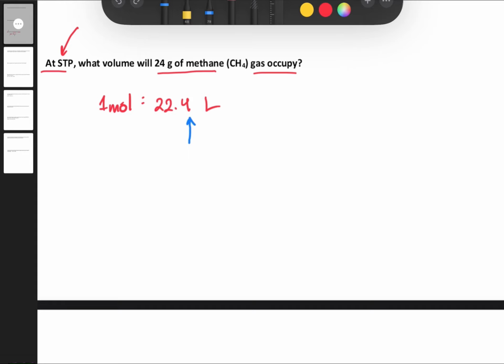Looking at the information, the volume is needed, so I need to calculate the moles. The moles equal mass over molar mass. The mass is 24 grams. The molar mass of CH4 is 12 for carbon plus four hydrogens times 1.008, then divide them.